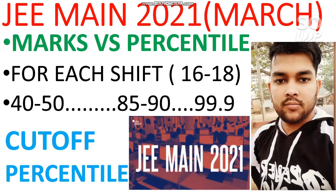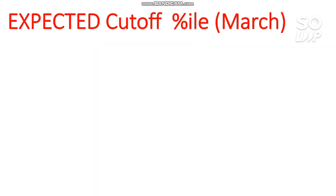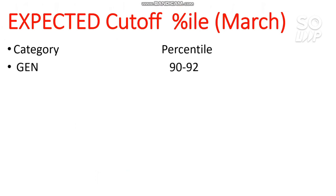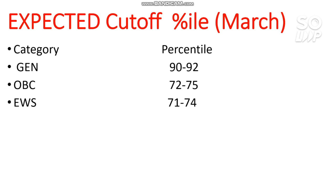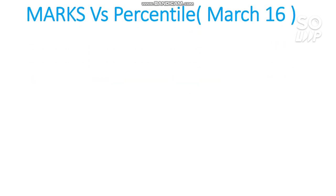First of all I will discuss the expected cutoff percentile. This is the overall cutoff percentile for JEE Main 2021, not dependent on any attempt. For General category you need to score 90 to 92 percentile to clear the cutoff; for OBC students 72 to 75; for EWS candidates 71 to 74; for SC 50 to 55 percentile; and for ST category you need to score 40 to 45 percentile to be eligible for JEE Advanced.